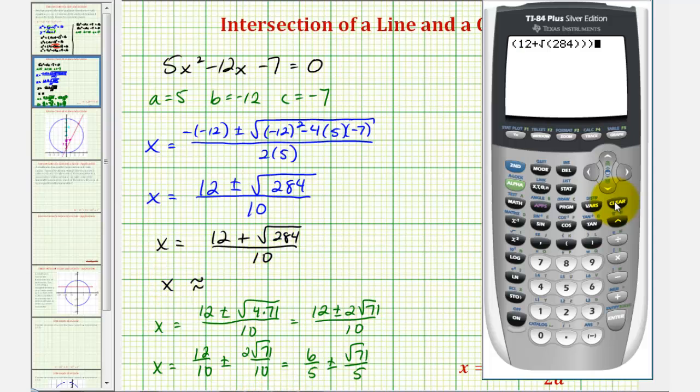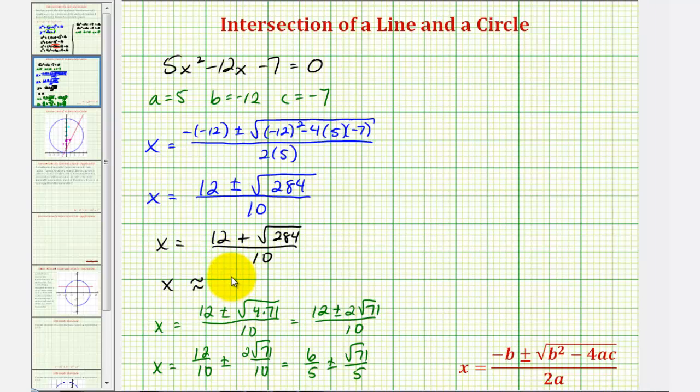So using a calculator, we'd have open parenthesis for the numerator, 12 plus the square root 284, close parenthesis for the square root, another one for the numerator, and then divide it by 10. So x is going to be approximately 2.885. Notice how the fourth decimal place is a 2, indicating we round down. So x is approximately 2.885.